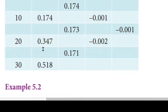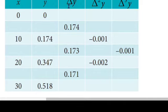0.518 minus 0.347 equals 0.171. So the first differences are 0.174, 0.173, 0.171. Next, del square y is the second forward difference.